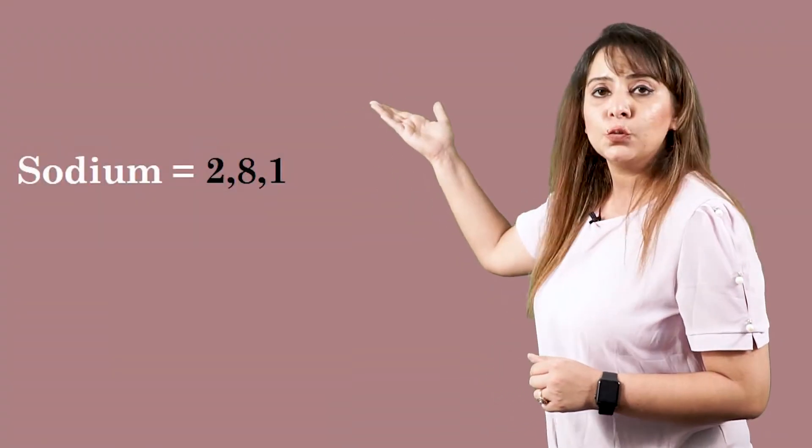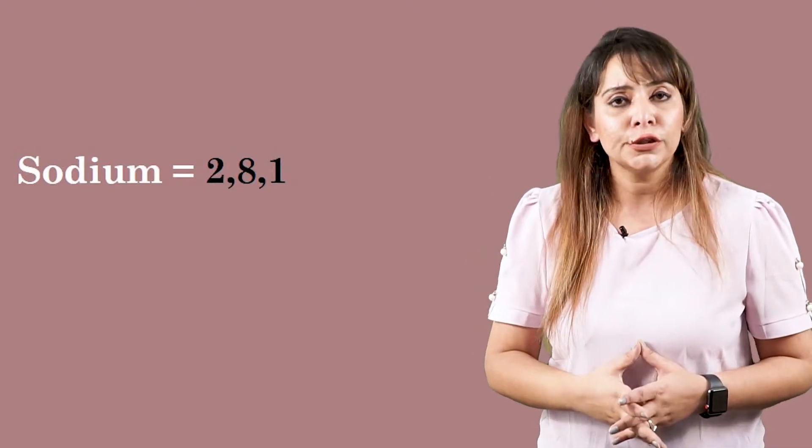Any element which possesses one, two, or three electrons in its valence shell is termed a metal. Since sodium has the configuration 2-8-1, it does not obey the octet rule — the tendency to attain eight electrons in the valence shell. But it can attain stability by losing that one electron. So metals can attain stability by losing their valence electrons.